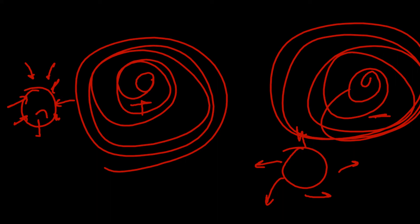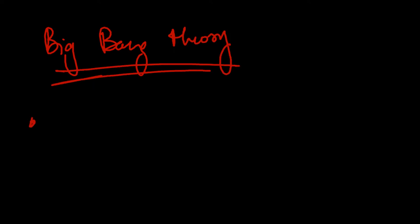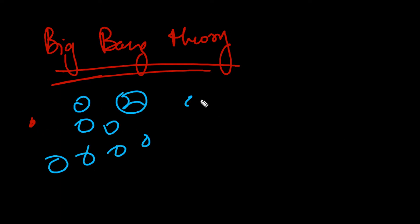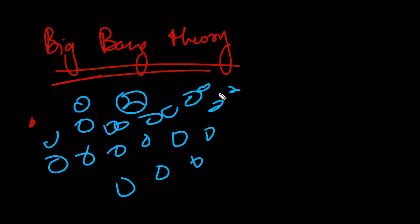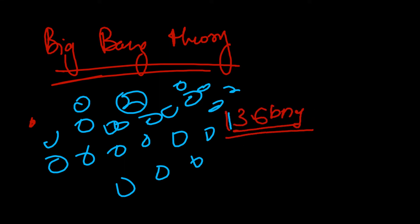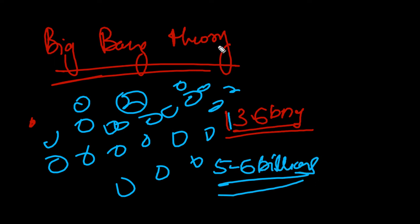Look at the Big Bang theory. Here there is a small, very dense point, and it will explode. In the Big Bang theory, all matter comes out of this explosion from a small, high-density point. If we talk about time, this happened around 13.6 billion years ago. This explosion and expansion continued for 5 to 6 billion years, so the universe is expanding. At the start it was dark — there was no star and no light, and the temperature was very high. Then slowly the density and temperature decreased.